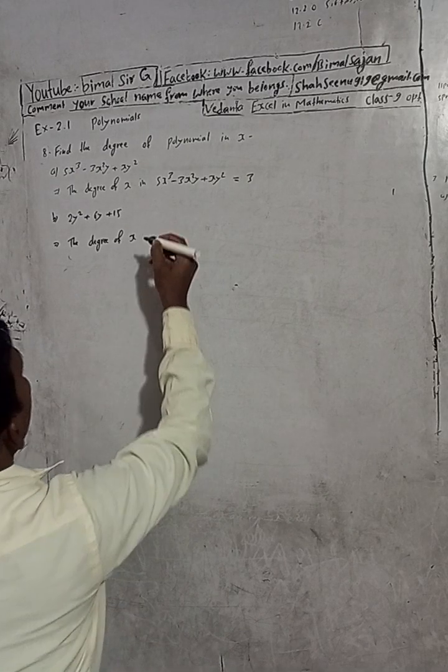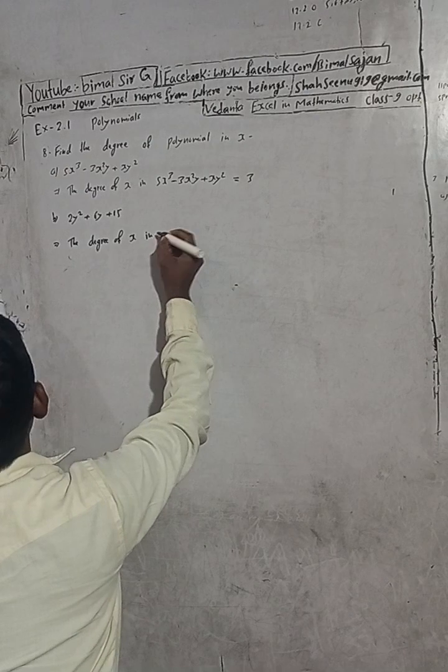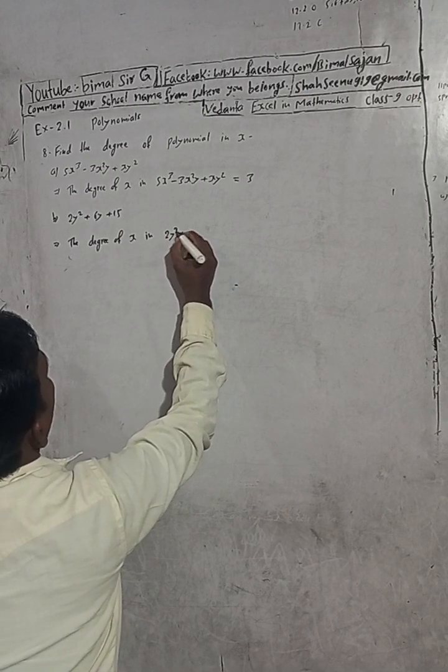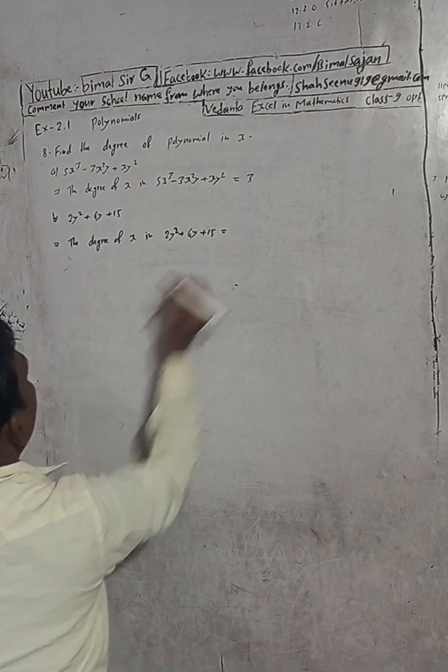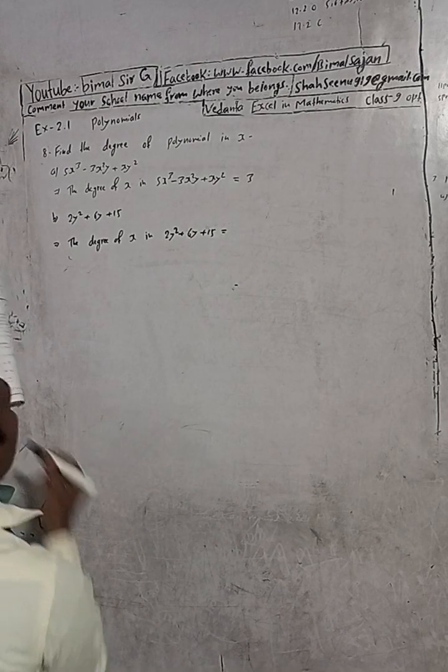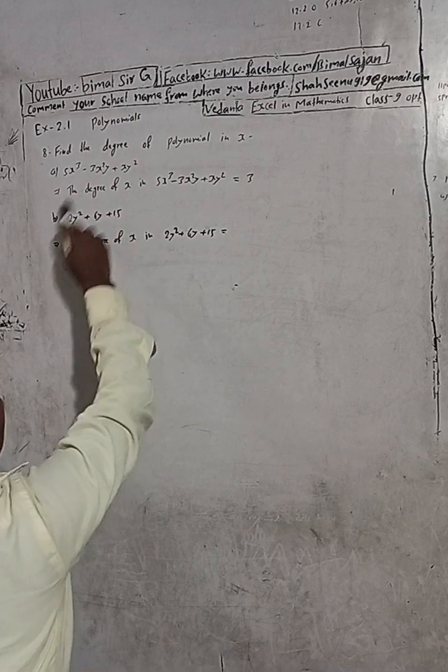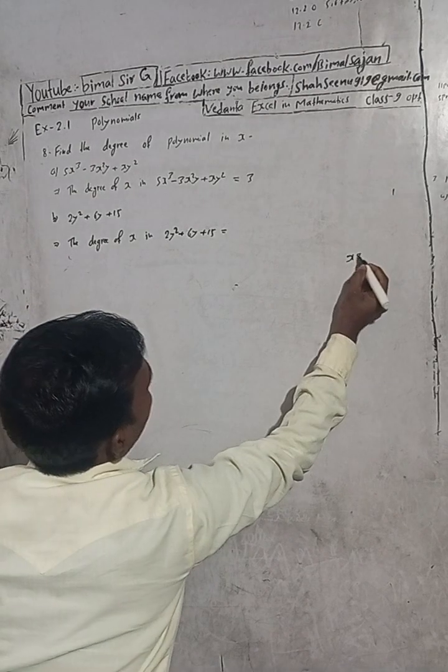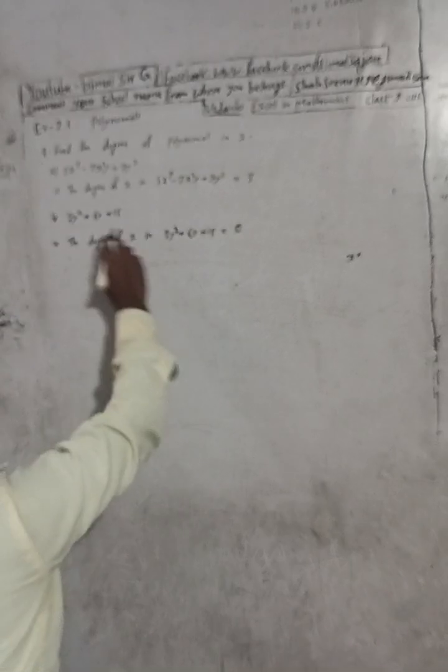The degree of x in 2y² + 6y + 50 is equal to zero. You can see this is y, there is no x term. No x term means x power is 0. The degree of x here is 0.